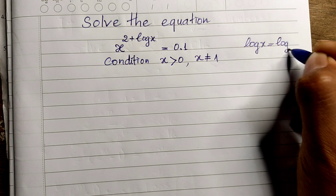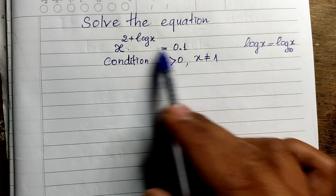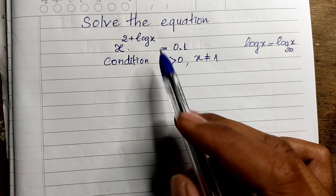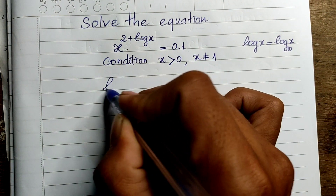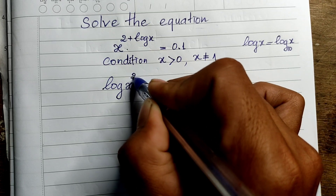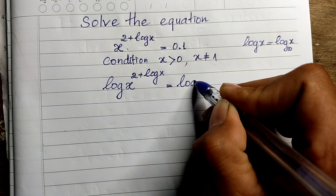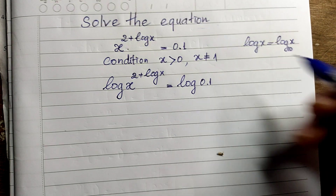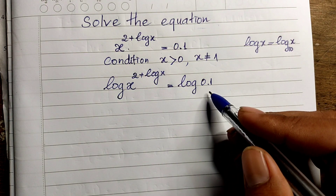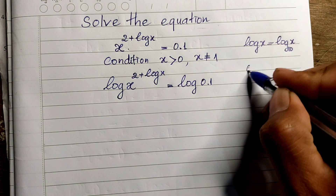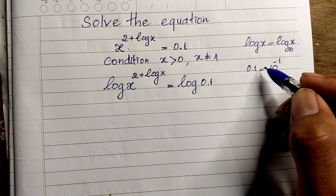Now, this log of 8 means log base 10 of 8. So to solve this equation, I will apply log to both sides of the equation. We get log of 8 to the power of 2 plus log of 8, equals log of 0.1. Now, 0.1 we can write as 10 to the power of minus 1.